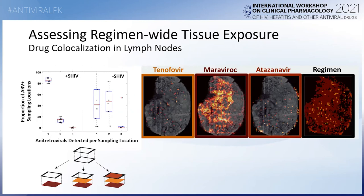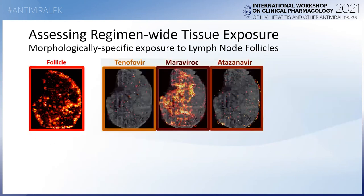For each location where drug is measured, we can also assess the extent to which drugs are co-localized with each other. As the cartoon illustrates, we can differentiate the extent to which each drug is detected by itself at a given sampling location or in the presence of one or two other drugs. These data are summarized in box plots, which show that in both healthy and infected animals, detected drug is often measured alone rather than in combination.